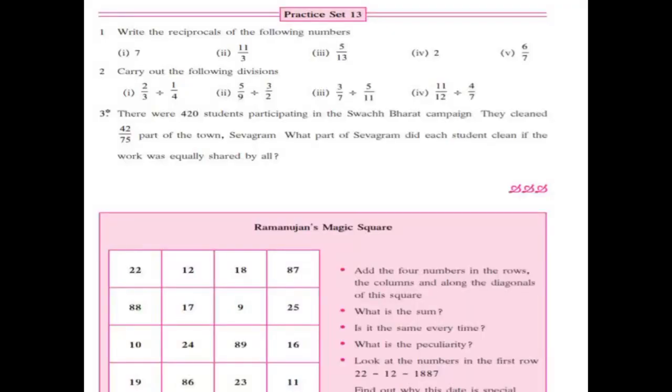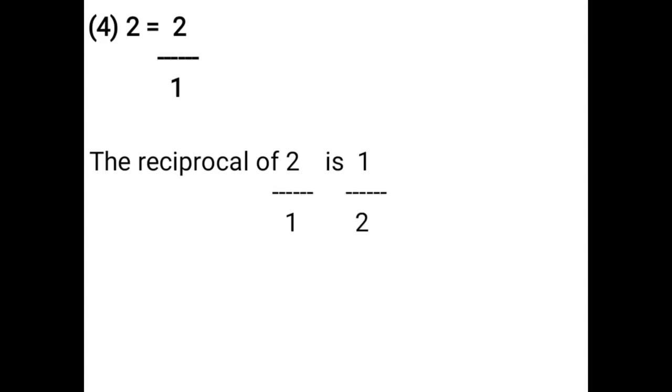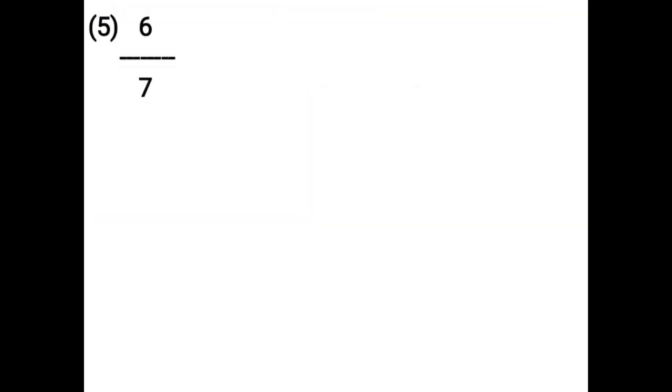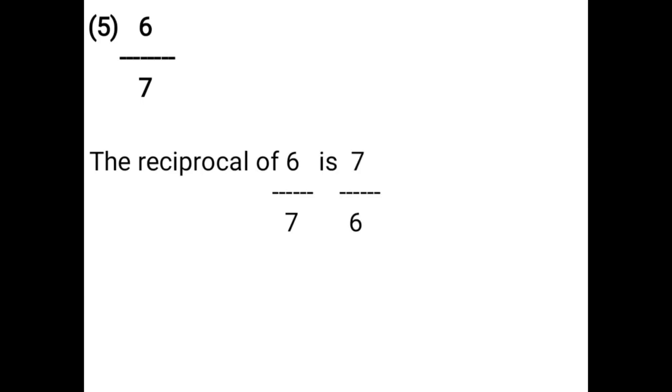Next: 2. If you have only the number without any denominator, you take denominator 1, that is 2 upon 1. The reciprocal of 2 upon 1 is 1 upon 2. Next: 6 upon 7. The reciprocal of 6 upon 7 is 7 upon 6.